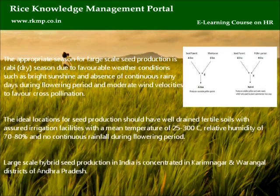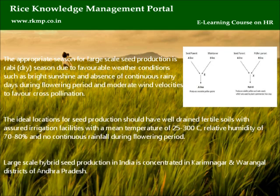The appropriate season for large-scale seed production is rabi (dry season) due to favorable weather conditions such as bright sunshine, absence of continuous rainy days during flowering period, and moderate wind velocities to favor cross-pollination. The ideal locations for seed production should have well-drained fertile soils with assured irrigation facilities, a mean temperature of 25 to 30 degrees centigrade, relative humidity of 70 to 80 percent, and no continuous rainfall during flowering period.